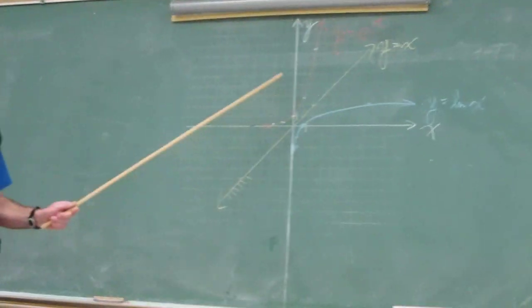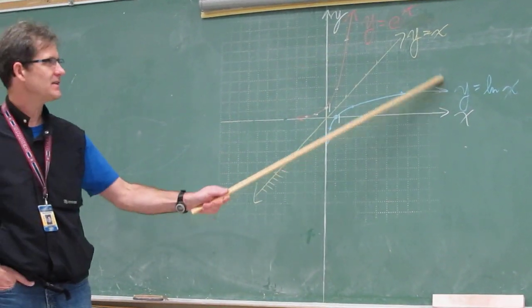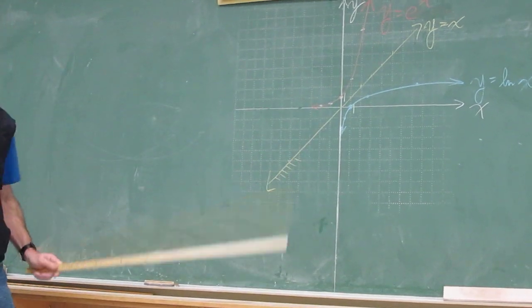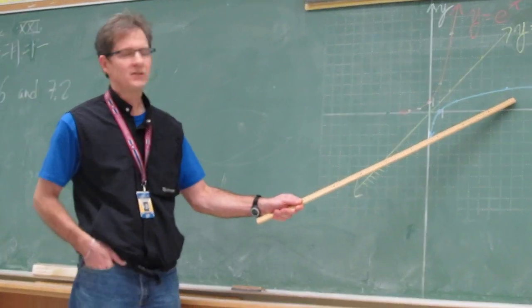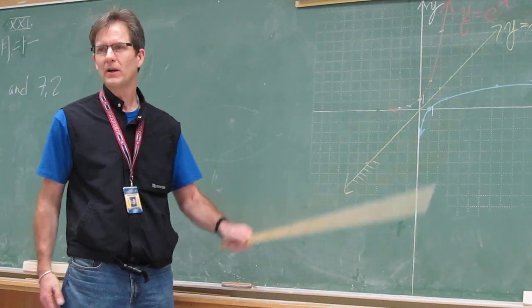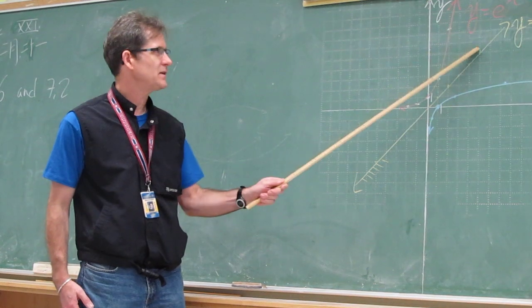Alright, look at what we've just talked about. This is the graph y equals e to the x. This is the graph y equals ln x. This is the line y equals x. And I think you can see that y equals ln x is a reflection of y equals e to the x in the line y equals x. Can you see that this is a reflection of this one in this line?